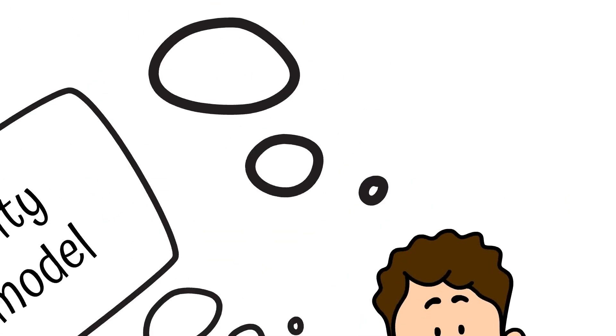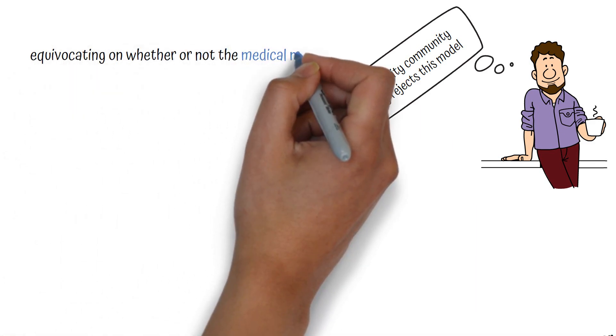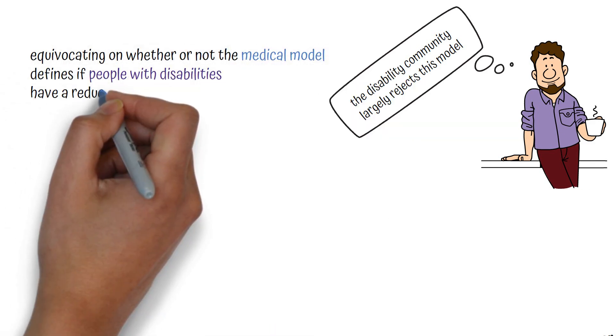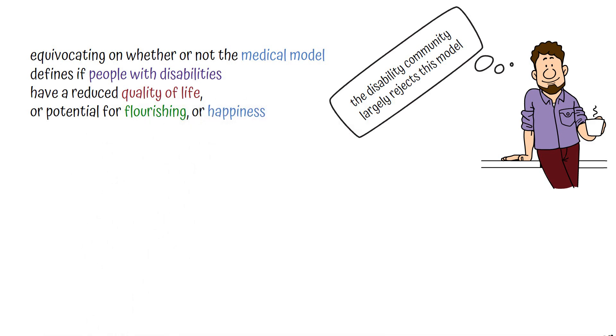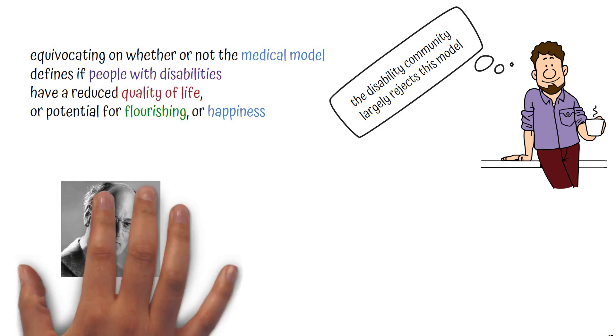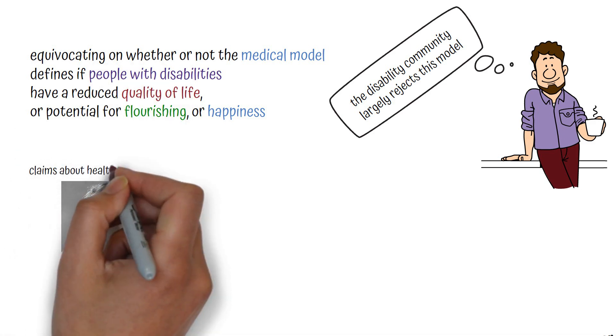Now, Kuhn ends his desiderata section by equivocating on whether or not the medical model defines if people with disabilities have a reduced quality of life or potential for flourishing or happiness. But as I said at the beginning of this video, and as Hare would argue, claims about health are always normative.